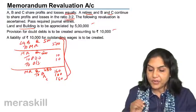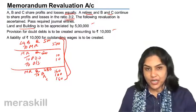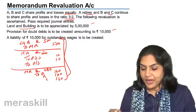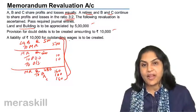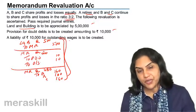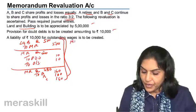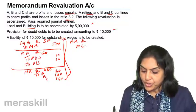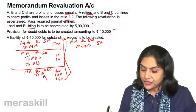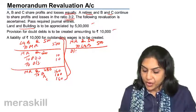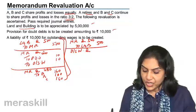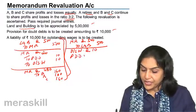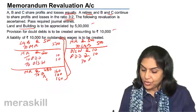This is more or less the same entries that we passed in the revaluation account. Now in the second half, the above entries will be reversed because we do not want to reflect the change in the value of assets — we do not want to show the revalued figures of assets and liabilities. So, memorandum revaluation account is debited, and land and building is credited. Similarly, outstanding wages account is debited 10,000 and provision for doubtful debts account is debited 10,000, to memorandum revaluation account — 20,000.